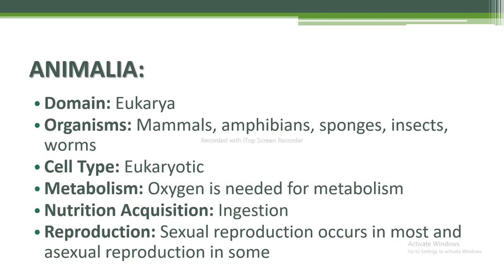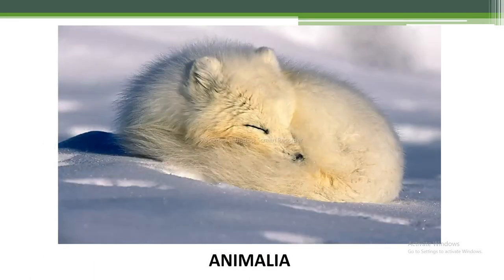Cell type is eukaryotic. Metabolism: oxygen is needed. Nutrition acquisition is through ingestion. Reproduction: sexual reproduction occurs in most, and asexual reproduction in some. This is Animalia as shown in the figure.